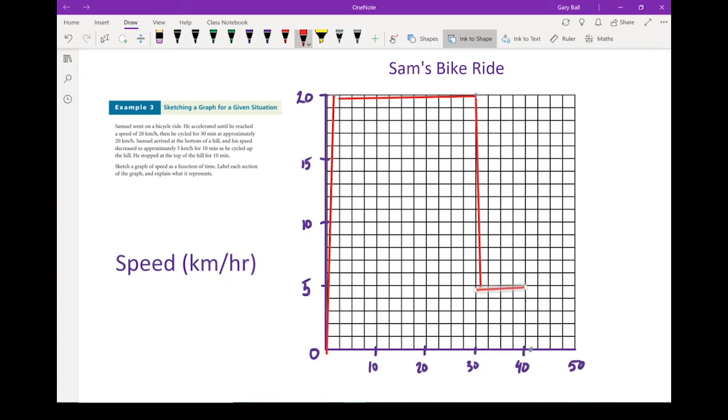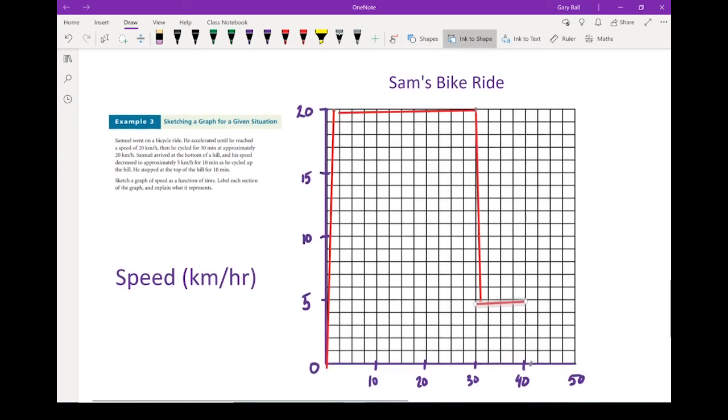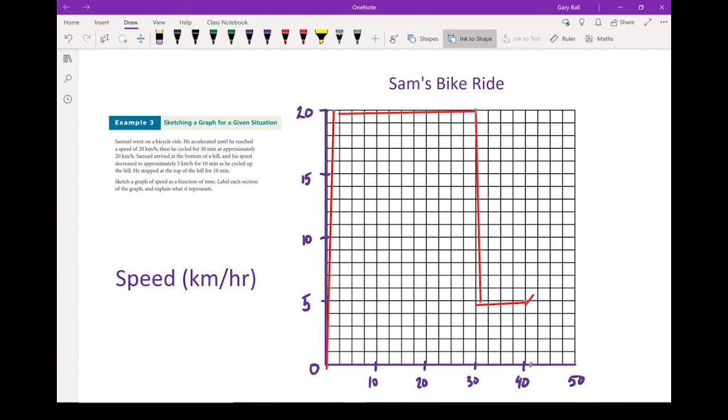And last, or sorry, not last, next. He slows down and stops at the top of the hill. Same thing again. You don't slow down instantly. When he gets to the top of the hill, he gets to 0. And then he waits at the bottom of the hill for 10 minutes. Sorry, waits at the top of the hill for 10 minutes. We get a speed of 0. Now that should be here. Speed of 0. So it would be sitting right at 0.